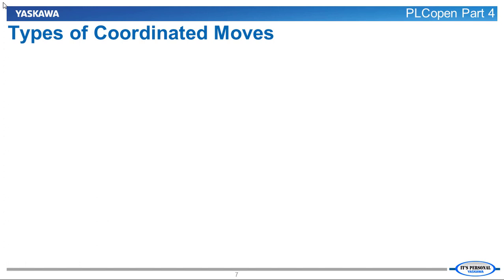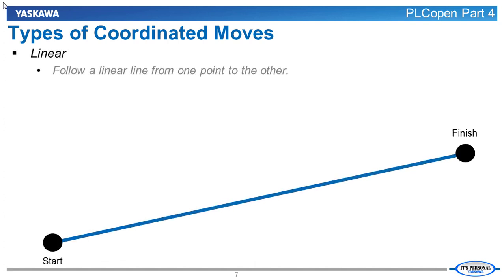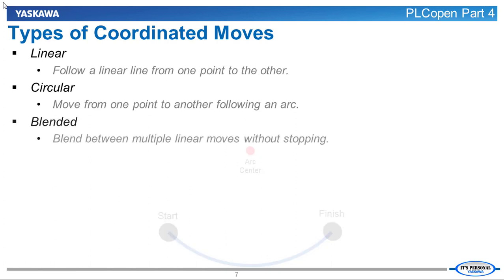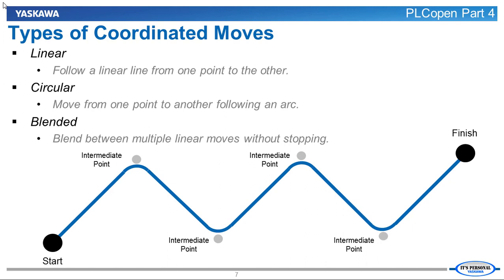PLCopen Part 4 also defines three different types of coordinated moves that can be used with any kinematic system. The simplest coordinated move is known as a linear move, which is used to move from one point to another in a straight line. The second is a circular move, which follows an arc between two points. The third is known as a blended move, which takes in multiple points and moves the machine to a final position smoothly without stopping at each point.